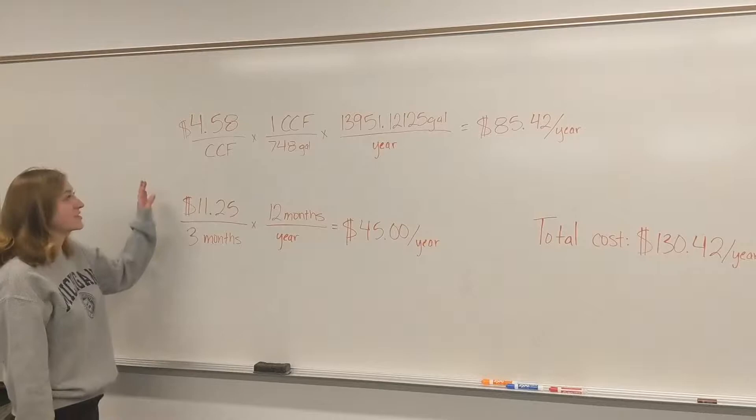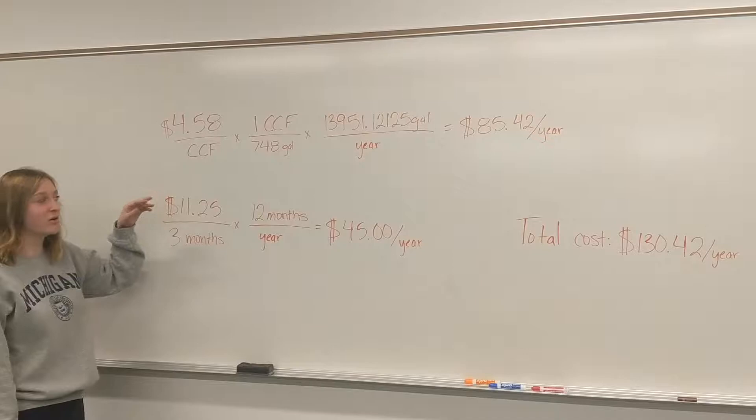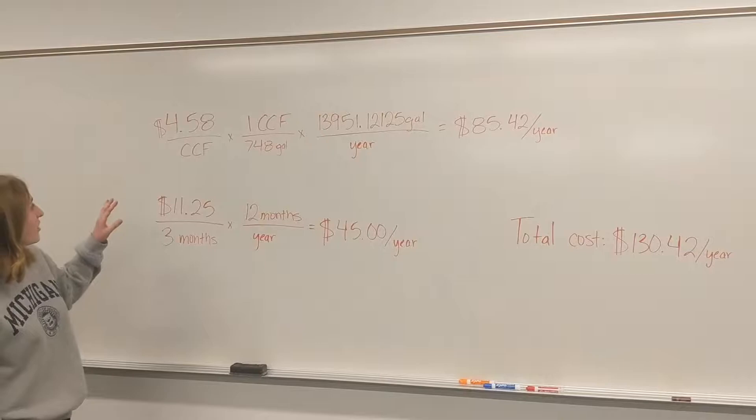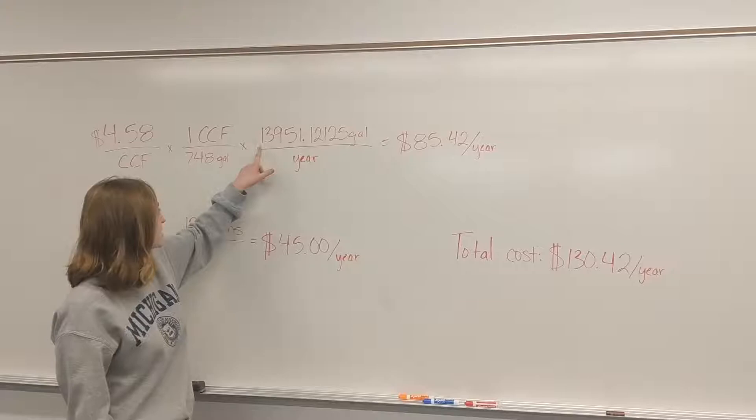Now to determine the downstream costs, we're going to analyze the cost of the treated water, which comes in the form of your wastewater bill, which is part of the water bill. So Ann Arbor charges $4.58 as a service fee per 100 cubic feet. 100 cubic feet is 748 gallons. And since each student per year uses 13,951 and some change gallons, the total cost is $85.42 per year.